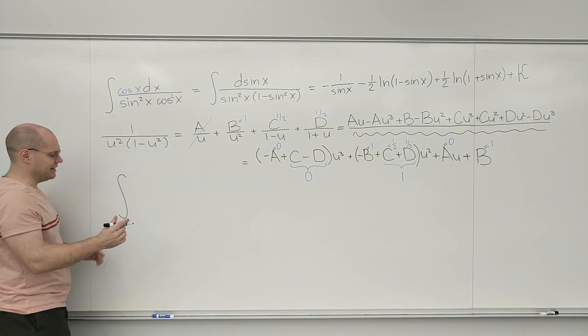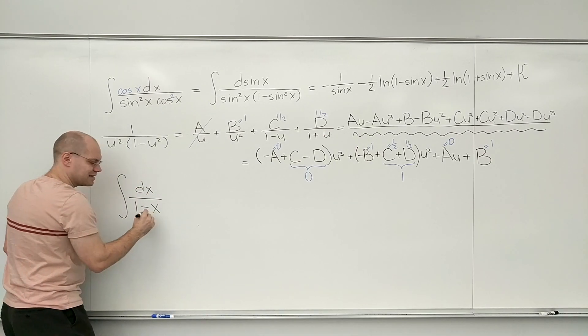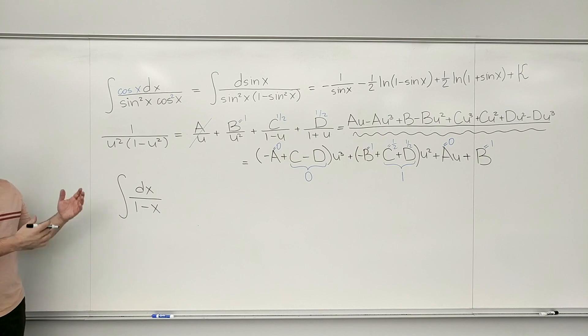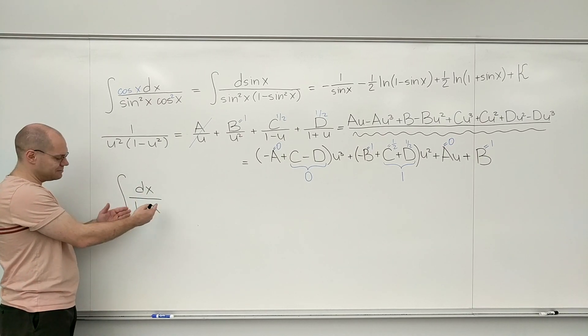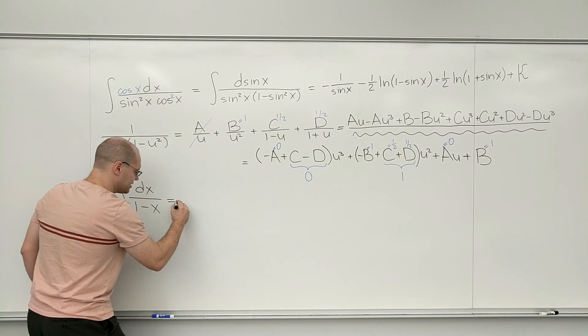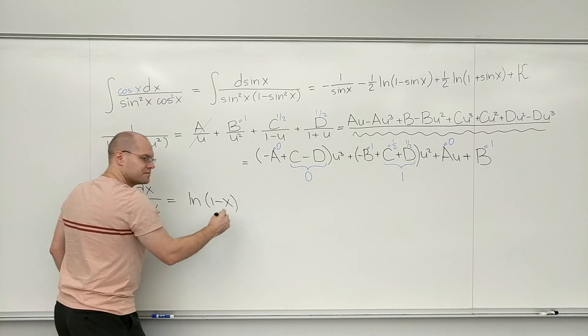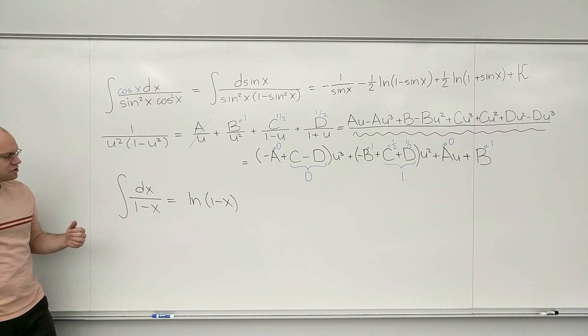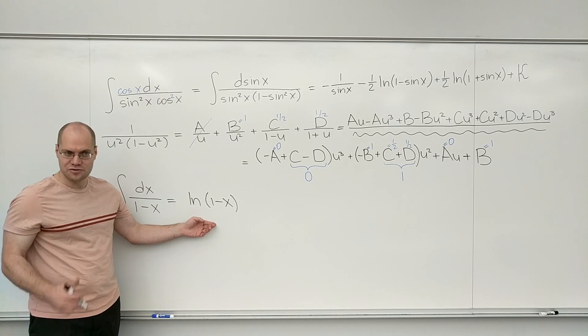I'm going to go back to X, just so that we can have a normal discussion. D X times 1 minus X. So let's just go back to our guessing method. We just see 1 over something, it's something very simple. So we're just guessing log of 1 minus X. Very good guess. Let's test if our guess was correct. Take the derivative of this, it becomes 1 over 1 minus X. Great.